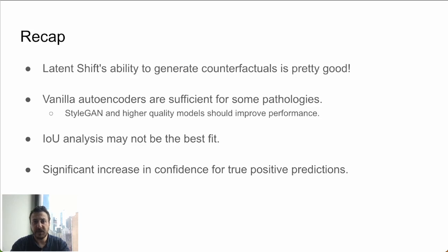To recap: the latent shift approach works pretty well qualitatively. Autoencoders get the job done. IOU analysis may not be the best fit here, at least with the annotations we have. And we find a significant improvement in prediction confidence for true positive predictions.